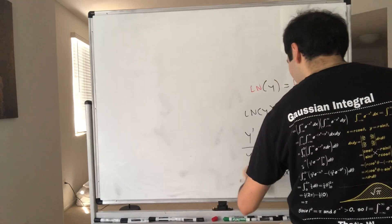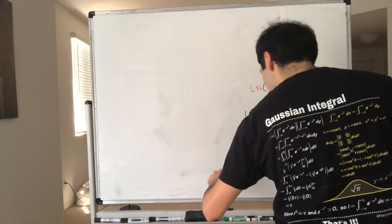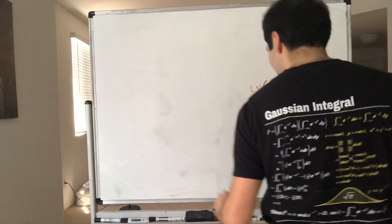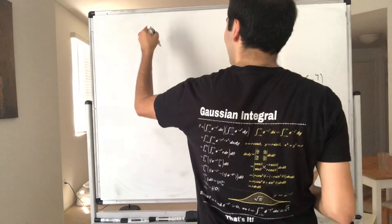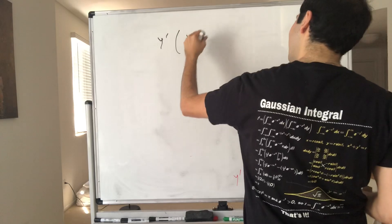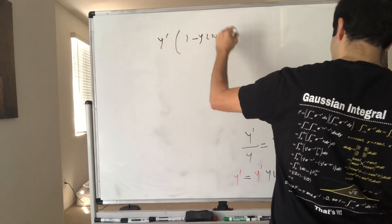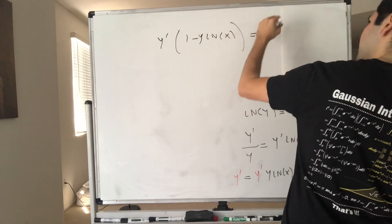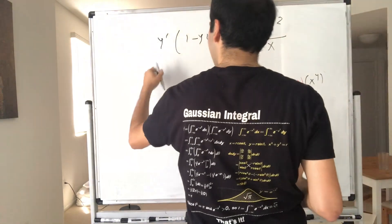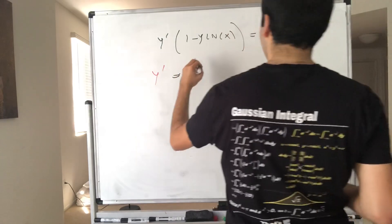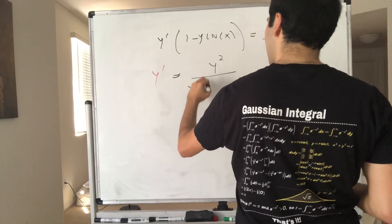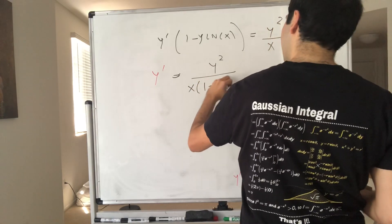So y prime... y prime and y prime. What we get is y prime times (1 minus y ln of x) equals y squared over x, and therefore y prime equals y squared over x times (1 minus y ln of x).